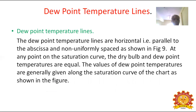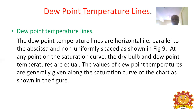Next we are going to discuss dew point temperature lines on the psychrometric chart. The dew point temperature lines are horizontal, parallel to the abscissa, and non-uniformly spaced. At any point on the saturation curve, the dry bulb and the dew point temperature are equal. The values of dew point temperatures are generally given along the saturation curve of the chart.